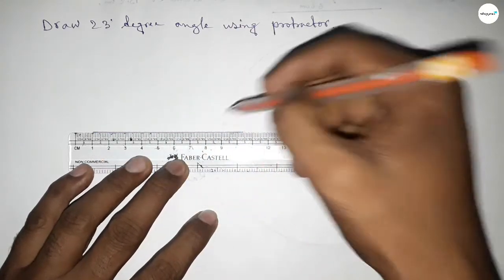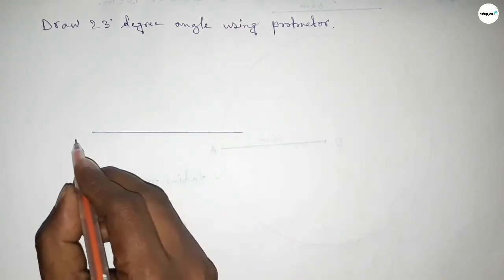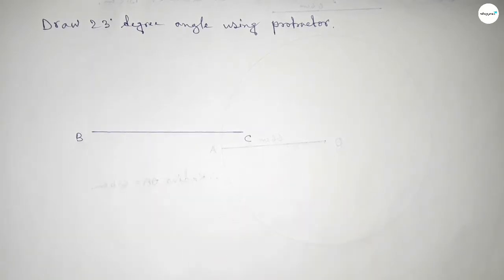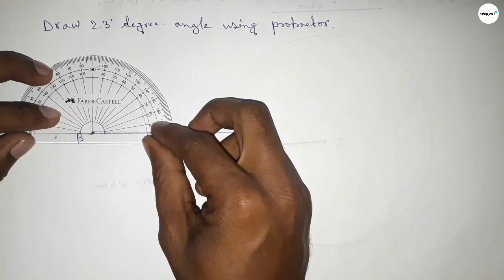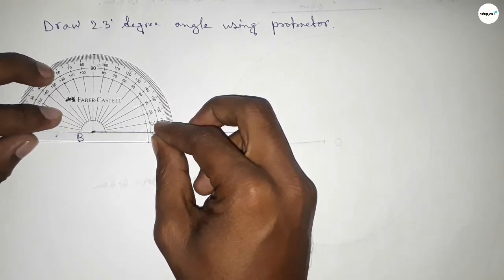So first drawing here a line, next taking here B point and here C point. Now putting the protractor on the point B perfectly, then counting the angles.